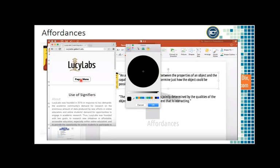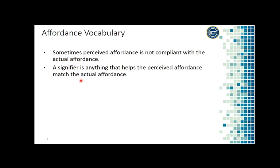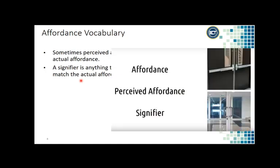Of course there is the use of signifiers, which we will talk about now. There is a difference between the affordance and the way the person is guided to use that particular affordance. Sometimes the perceived affordance is not compliant with the actual affordance. A signifier is anything that helps the perceived affordance match the actual affordance.